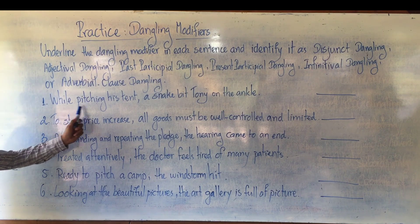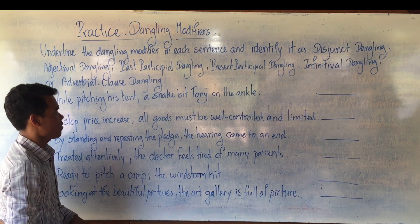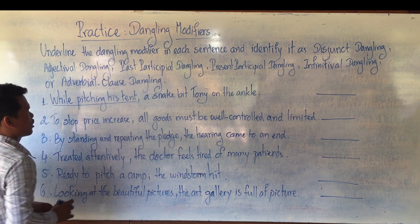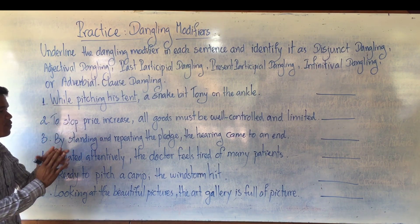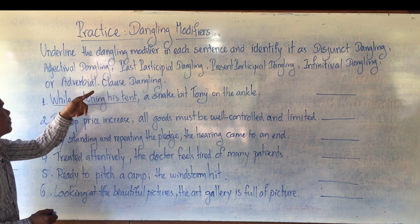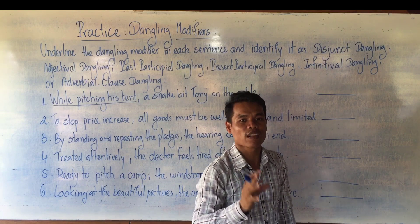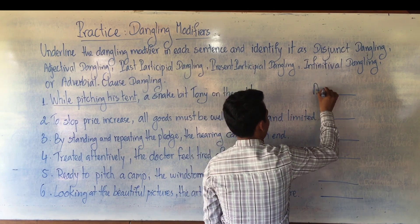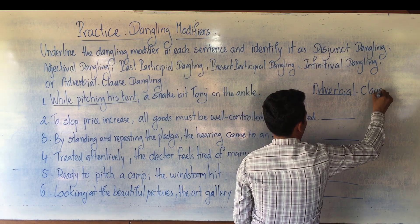Number one: 'While pitching his hand, a snake bit his knees on the ankle.' Which one is dangling? The dangling is 'while pitching his hand.' When you see the word 'while,' pitching is a conjunction. That's why conjunction plus subject verb can become an adverb clause. So this one is called adverbial clause dangling. Based on the definition, all adverb clauses are at the beginning of the sentences, so it is adverbial clause dangling.